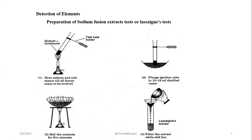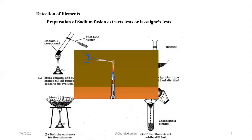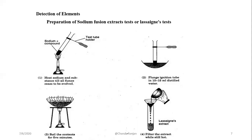Now, after all the preliminary investigation tests, we carry out the detection of elements. We take the compound and fuse it with sodium metal in a fusion tube. We heat it, then plunge the ignition tube into distilled water, boil it down to half the volume, and filter. What we get after filtration is the Lassaigne's extract, or sodium fusion extract.